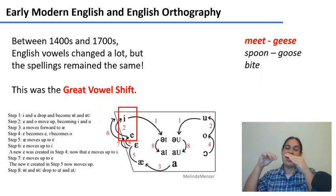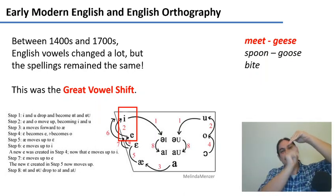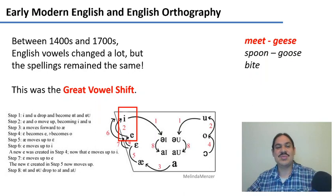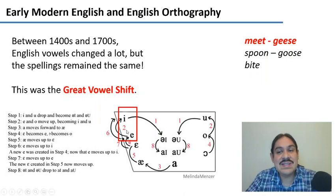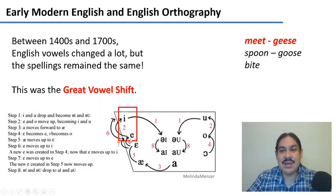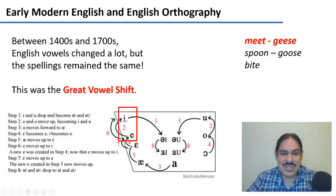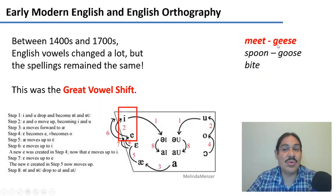One vowel pushed another one, pushed another one, pushed another one into a different direction. So for example, if you had a word with the sound 'e,' like 'mat' or 'gas,' this one went up a notch in our vocalic triangle and became 'e,' as in 'meat' or 'geese.'